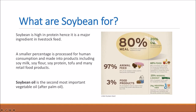Of the 20% that becomes soya oil: 68% is for food — cooking oil, vegetable oil, margarine, mayonnaise — all coming from soya oil or palm oil. About 25% is used for biodiesel, which is growing more and more, and around 7% is used for other purposes.